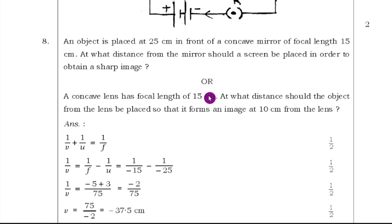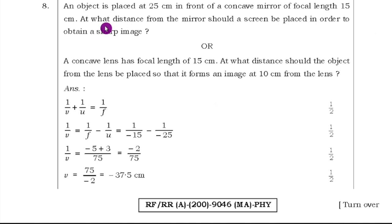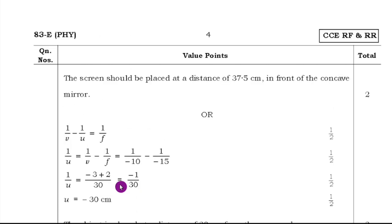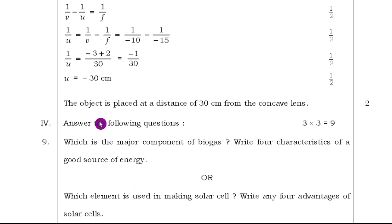Eighth question, an object is placed 25 cm in front of concave mirror of focal length 15 cm. At what distance from the mirror should a screen be placed in order to obtain a sharp image? Or, a concave lens has focal length of 15 cm at what distance should the object from the lens be placed so that it forms an image at 10 cm from the lens? Here they asked mirror, concave mirror. We have to use the mirror formula 1 by V plus 1 by U equals 1 by F. Substitute focal length and image object distance. You take the LCM and you will get V equals minus 37.5 cm. Or you have one more problem. There also, mirror lens formula you have to use.